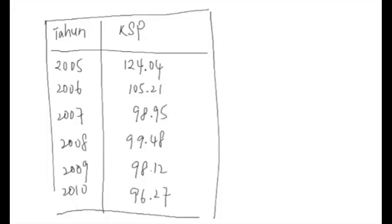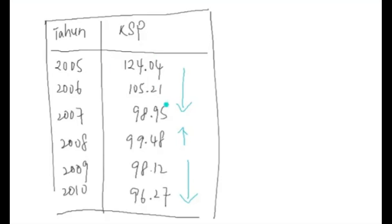Nanti Miss akan tanya. KSP turun dari tahun 2005 sehingga 2007. Lepas itu dia naik pada tahun 2008. Kemudian dia turun balik. Jadi kadar syarat perdagangan dari tahun 2005 hingga 2007 menurun. Kemudian pada tahun 2008, KSP menaik. Dan kembali menurun pada tahun 2009 hingga 2010.